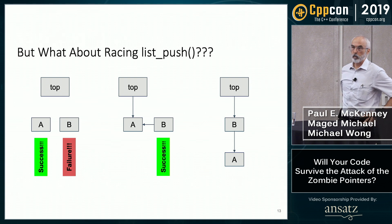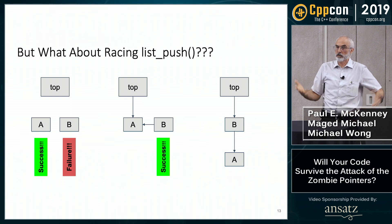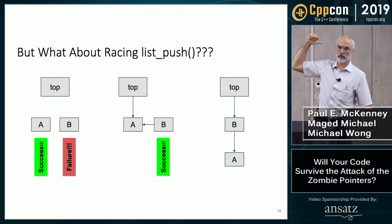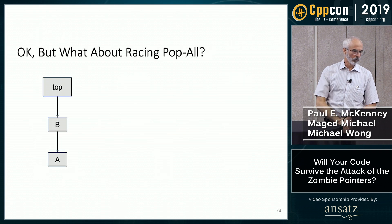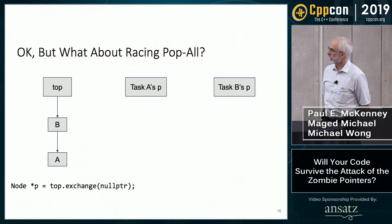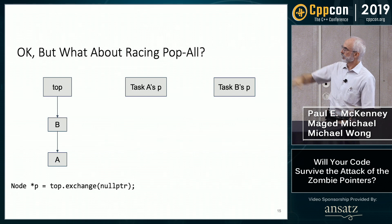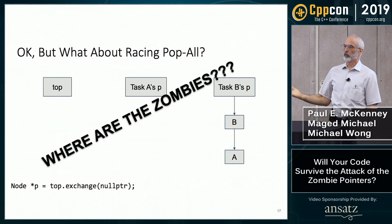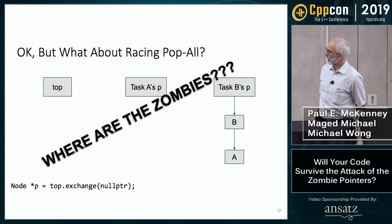Now how about racing pop_all? Starting with that same state — both pop_alls go concurrently. Both threads do an exchange, putting a null pointer into the list and getting back the list in their local variable P. The B thread wins this time. They do the exchange and one thread gets the list; the list is now empty for the other.